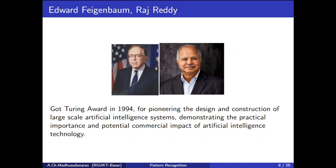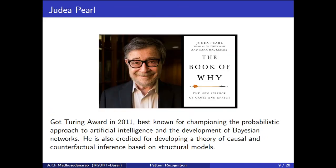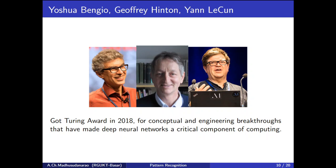This was for demonstrating the practical importance and potential commercial impact of artificial intelligence technology. Then in 2011, Judea Pearl received the Turing Award for his work on Bayesian networks. And in 2018, three people received the Turing Award: Yoshua Bengio, Hinton, and LeCun, for their work related to deep neural networks.